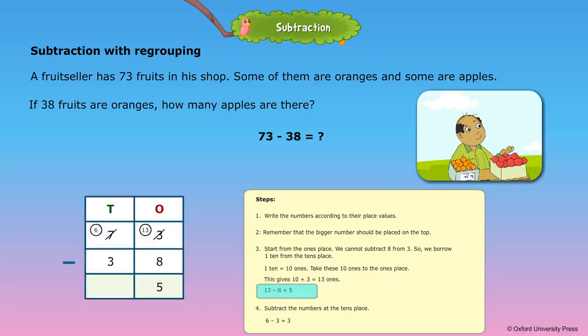13 minus 8 is equal to 5. Step 4: Subtract the number at the tens place. 6 minus 3 equals 3. There are 35 apples in the shop.